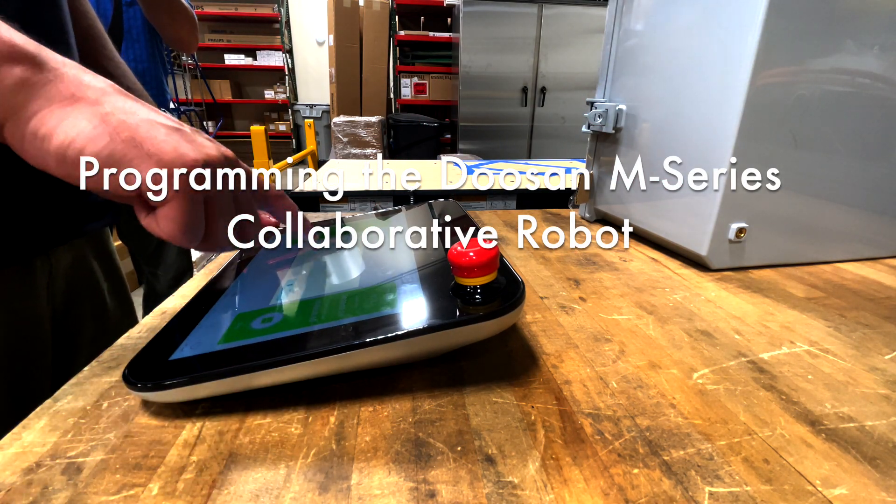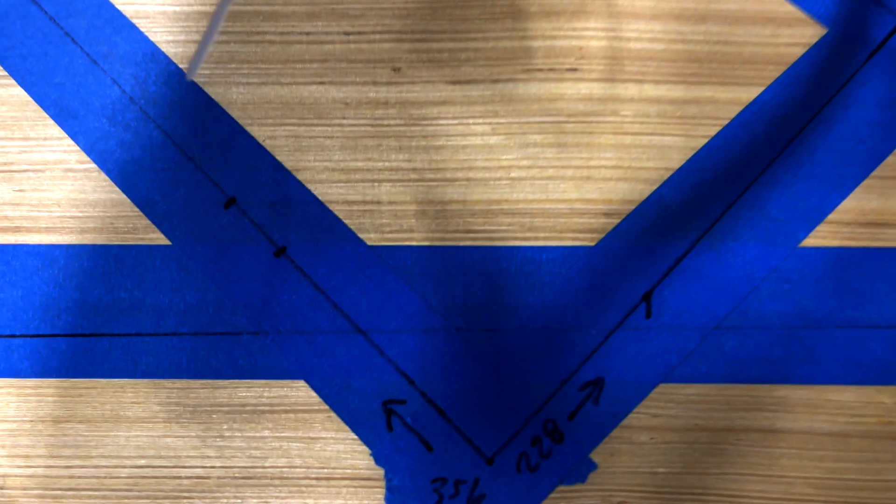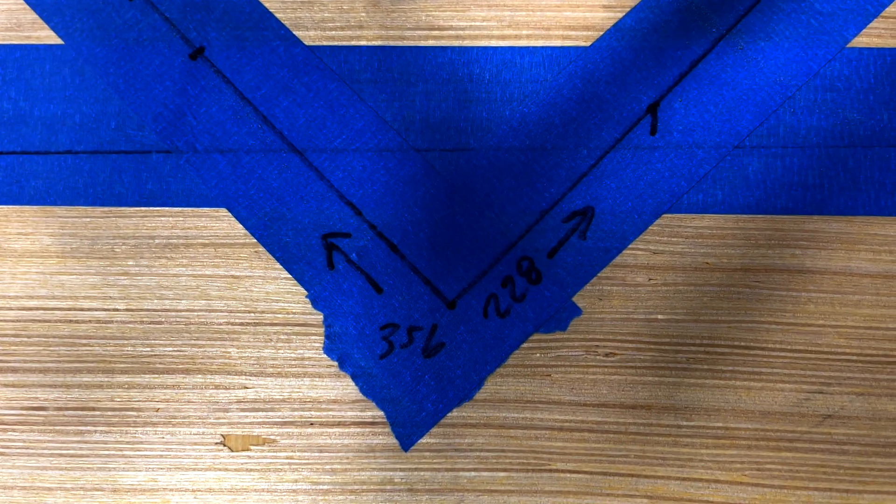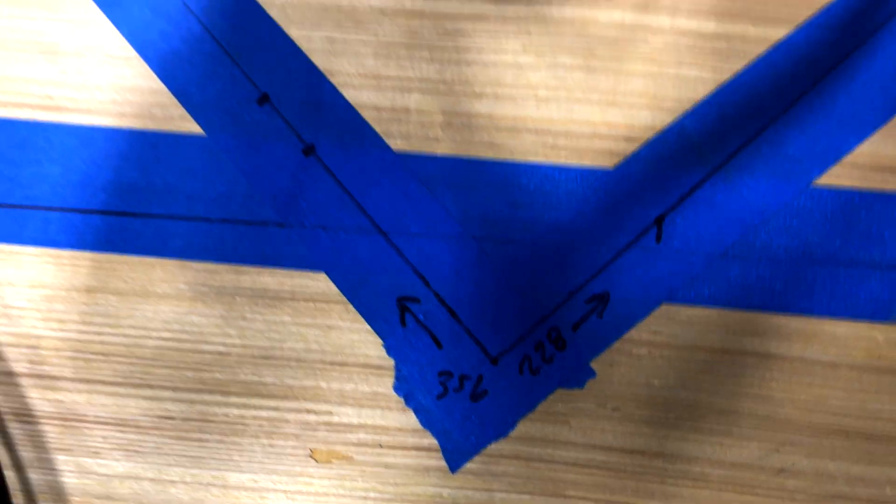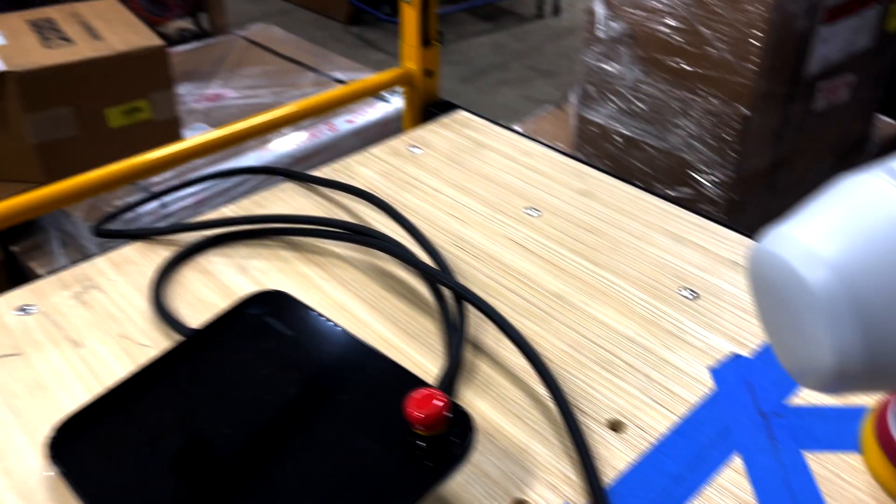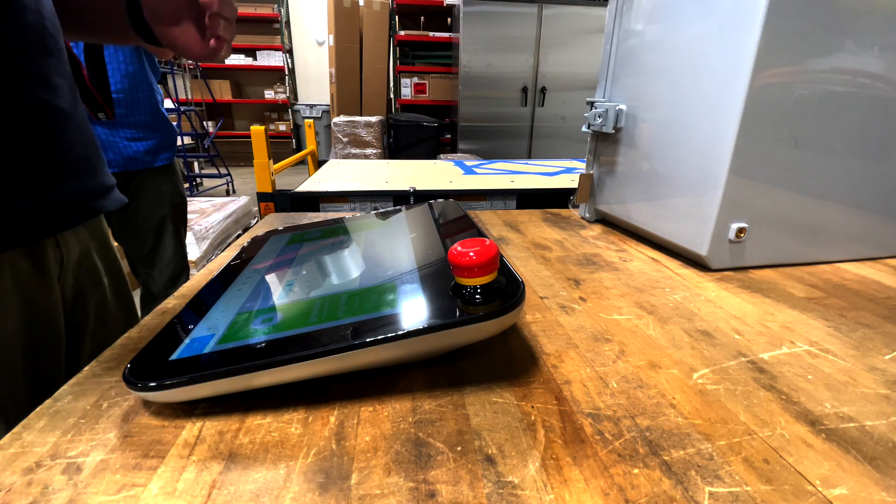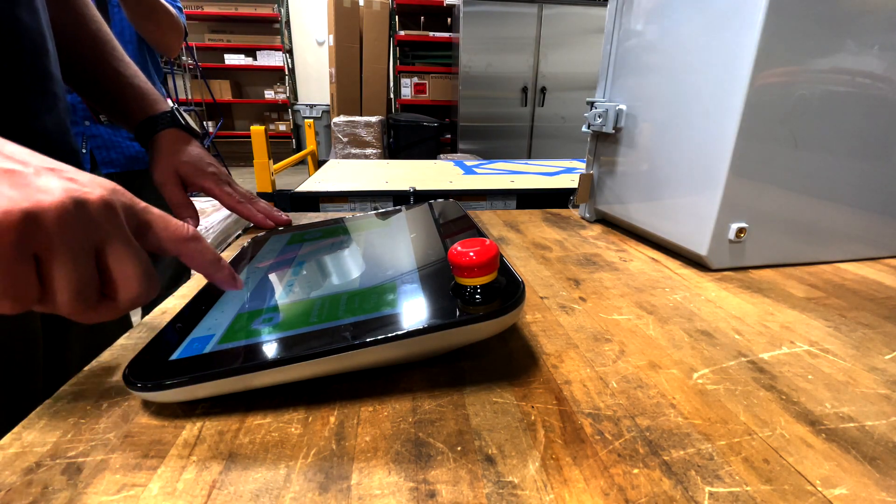It's going to ask me for X direction, we're going to go with 356. We're going to ask for a Y direction, we're going to go 228. It's going to ask us for an offset while we're sanding, we're going to go with 50mm.